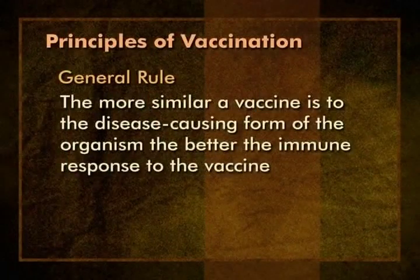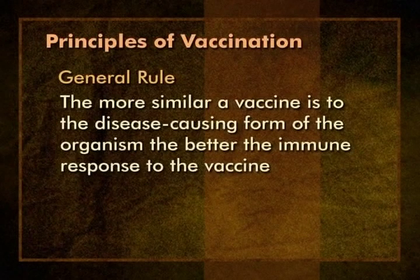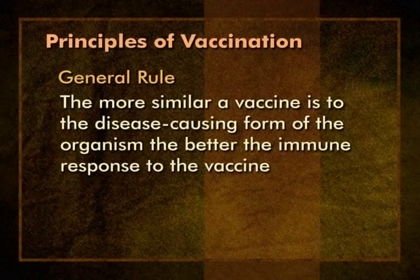In order to simplify some of the principles of vaccination, we have developed a few general rules. Here's the first general rule: the more similar a vaccine is to the disease-causing form of the organism, the better the immune response to the vaccine. This makes sense, since disease-induced immunity is generally long-lasting, and the closer we can approximate that with vaccine, the better the protection. From this rule, you might expect that live vaccines would have some advantages, since infectious diseases are caused by live organisms. To illustrate how live vaccines work, here's our third animation.